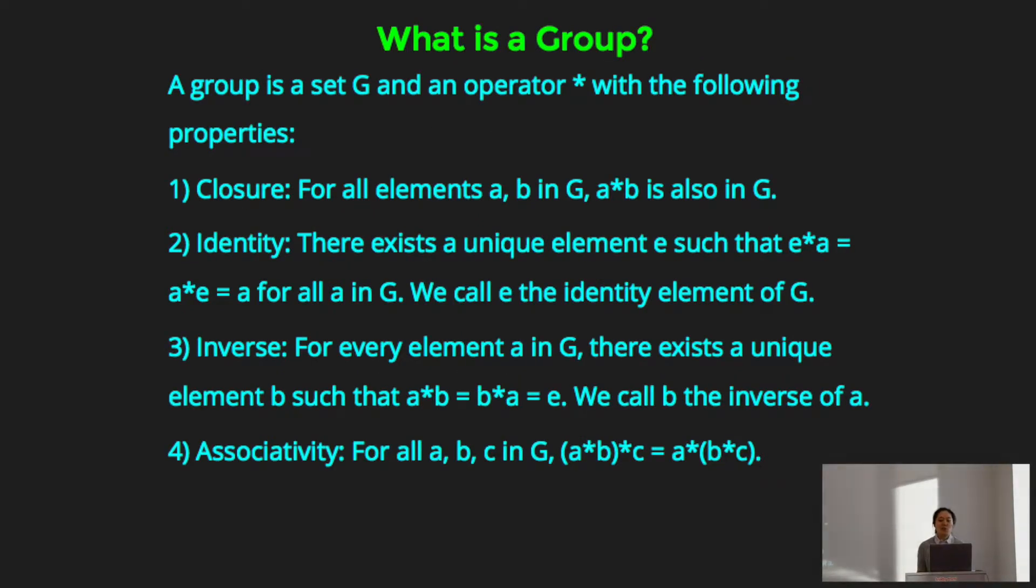So what is a group? A group consists of two things. It's a set G and an operator star with the following four properties. And by set, I mean just a collection of numbers, variables, or functions. It doesn't matter what's inside that set as long as the set satisfies the group axioms. And similarly, it doesn't matter what the operator is. It can be addition, multiplication, function composition, or some combination of the three, as long as the operator satisfies the group axioms.